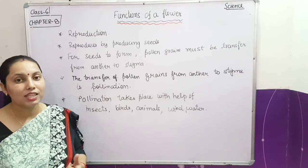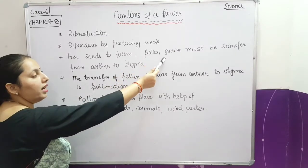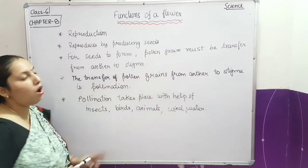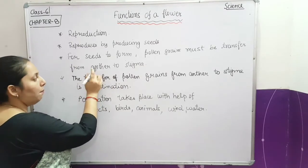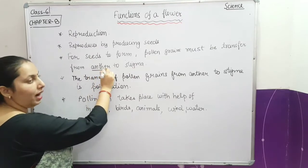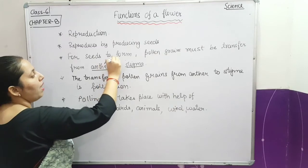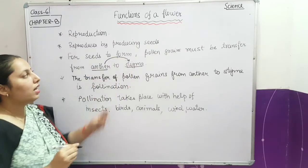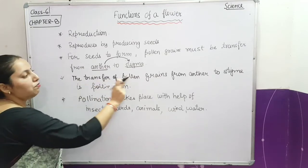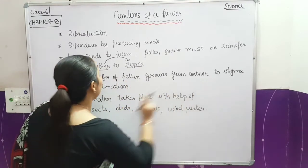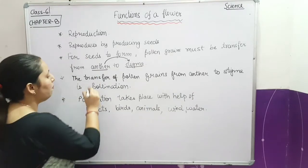How are seeds formed? Seeds are formed when the pollen grains transfer from the anther to the stigma. The anther is the male part and the stigma is the female part. When the pollen grains transfer from anther to stigma, then seeds are formed. The transfer of pollen grains from anther to stigma is known as pollination.